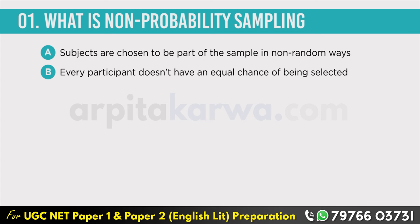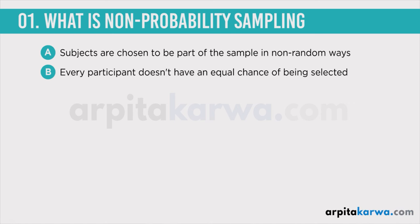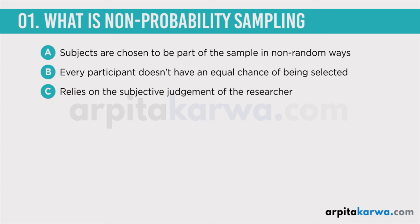In case of non-probability sampling every participant doesn't have an equal chance of being selected. For example one person could have a 10 percent chance of being selected as part of the sample and another person could have a 50 percent chance. So probability sampling involves random selection while non-probability sampling does not require random selection — it actually relies on the subjective judgment of the researcher.